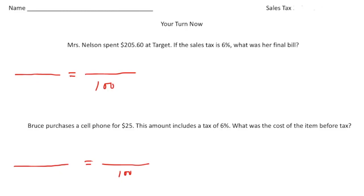All right, welcome back. Let's see how you did on these practice problems. So the first one says, Mrs. Nelson spent $205.60 at Target. If the sales tax is 6%, what was her final bill? All right, so what this is saying is basically that $205.60, that does not include the tax.